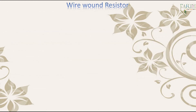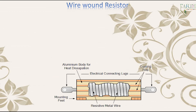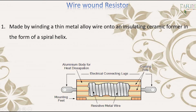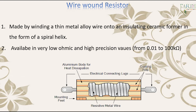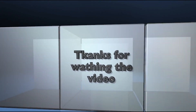Wire wound resistor. A wire wound resistor is an electrical passive component that limits current. The resistive element consists of an insulated metallic wire that is wound around a core of non-conductive material. 1. Made by winding a thin metal alloy wire onto an insulating ceramic former in the form of a spiral helix. 2. Available in very low ohmic and high precision values, from 0.01 to 100k ohm.